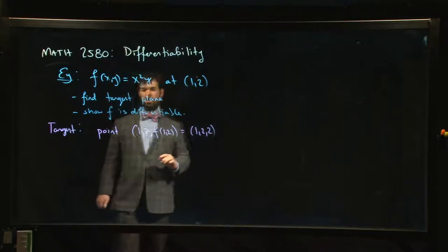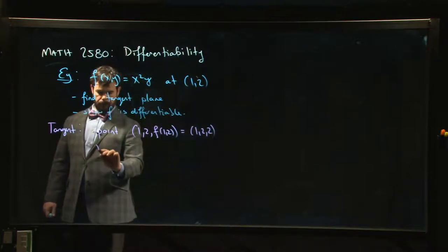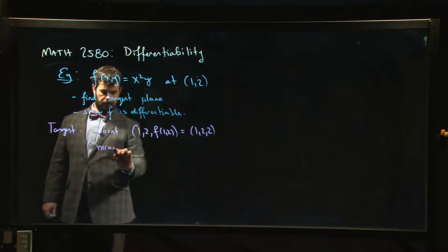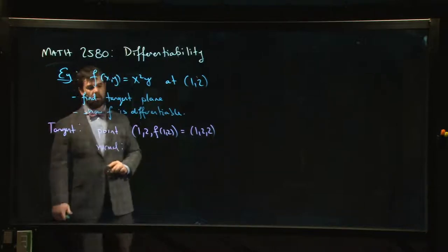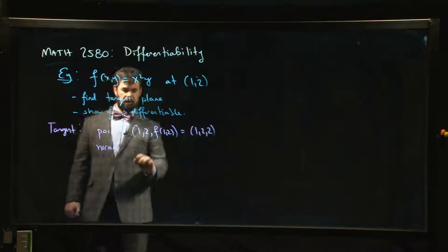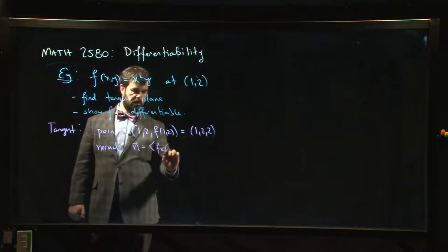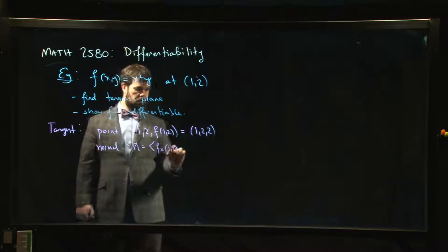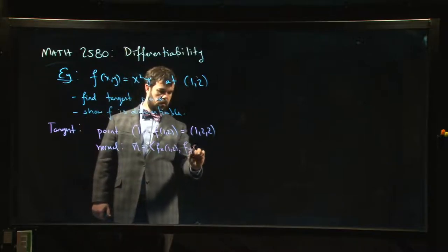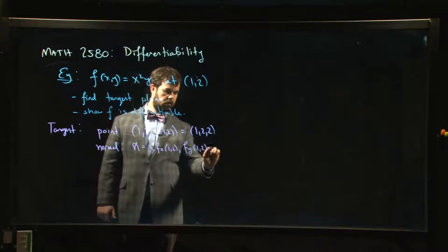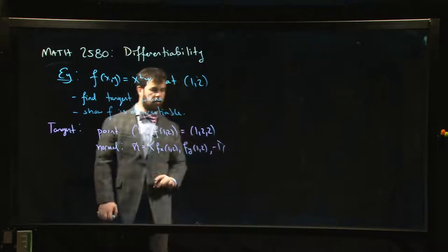A normal vector. So the normal vector is, this is one way to kind of do it, the normal vector is given by the x derivative at (1,2), the y derivative at (1,2), the z component is minus 1.